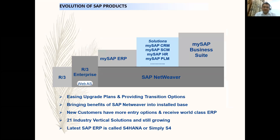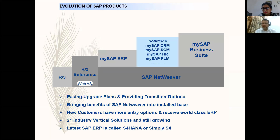Regarding the evolution of SAP products: first they had R1, then R2, and then the main product R3. Then they enhanced it to R3 Enterprise, which was web-enabled, followed by mySAP ERP. Then they came up with advanced solutions like CRM (customer relationship management), SCM (supply chain management), and PLM (product lifecycle management). The main current product is called mySAP Business Suite, and the latest product — launched two to three years ago — is called S/4HANA, or simply S4.